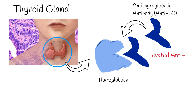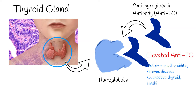There are two important cases when thyroglobulin and/or antithyroglobulin is elevated. The first is thyroid inflammation, which can be a sign of autoimmune thyroiditis, Graves' disease, or overactive thyroid, and Hashimoto thyroiditis.